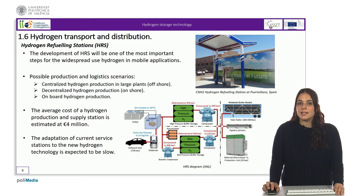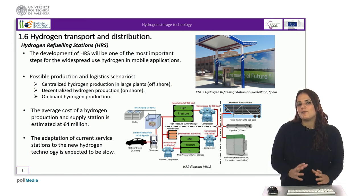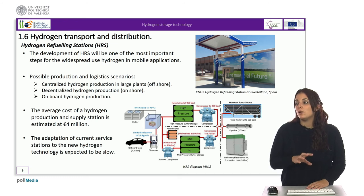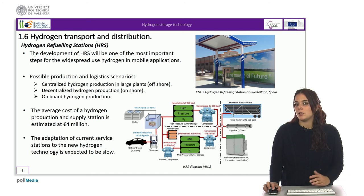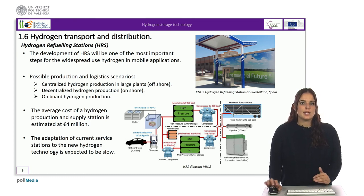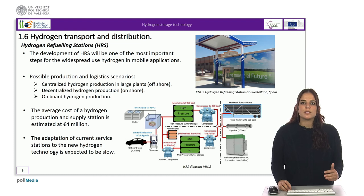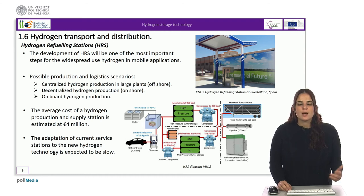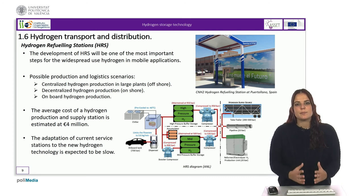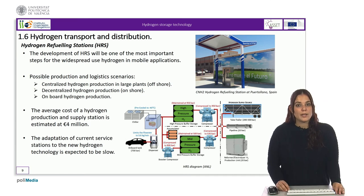Finally, the last case is on-board hydrogen production, where a reformer would be added on-board the vehicle itself. The average cost of a hydrogen production and supply station is estimated at 4 million euros. In the next few years, the aim will be to offer robotic service stations that deliver hydrogen in just a few minutes using safety valves that prevent leaks when refueling. However, the adaptation of current service stations to the new hydrogen technology is expected to be slow and not free of administrative, political, or homologation obstacles.